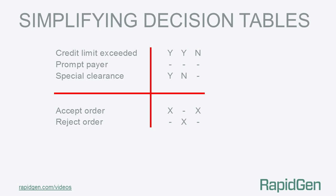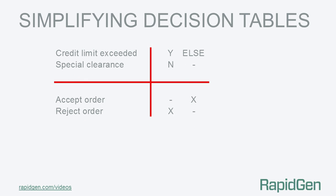This table can't be simplified any further using the simplifying rules. However, we can see that condition 2 — is the customer a prompt payer — is no longer relevant and can be removed. One final thing we can do is keep rule 2 and replace rules 1 and 3 with an else rule. In simplifying the decision table, we have logically reduced the 8-rule table to 1 rule and the else rule. The result: only reject the order where the customer has exceeded their credit limit and they don't have special clearance.